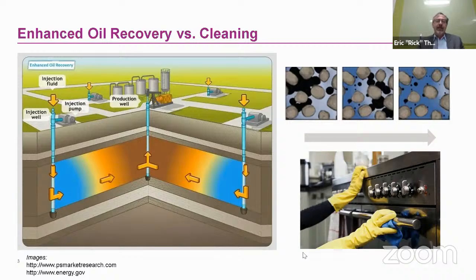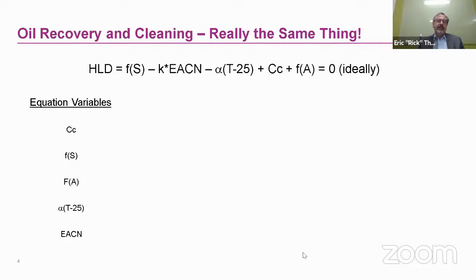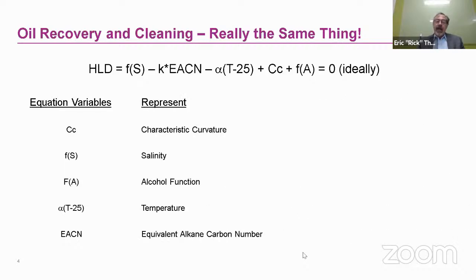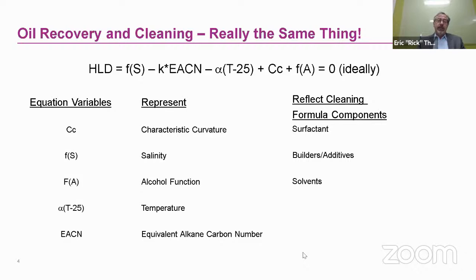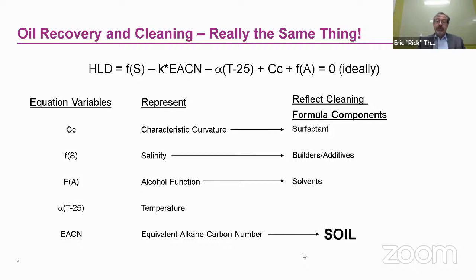Using those ideas, we take the HLD equation variables — characteristic curvature, salinity, etc. — and apply them to a cleaning situation. Our surfactant is represented by the characteristic curvature, our builders are represented by the salinity, and the alcohol function represents our solvents. Temperature is always part of the cleaning environment. Very importantly, soil is also part of the formula: the EACN is necessary in order to attain that low interfacial tension that enables better cleaning, so the soil must be considered as its own variable.